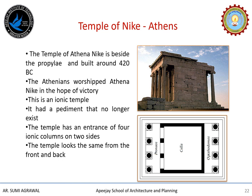The Temple of Nike is located just beside the Propylai. The Athenians worshipped Athena Nike in the hope of victory, and this temple is dedicated to Athena Nike. It is an Ionic temple which has four columns in the front as well as the back, so it looks the same from front and back. Having four columns, it is known as tetrastyle. The columns along the east and west fronts are monolithic. The ratio of height to diameter of the columns is 7 to 1, creating an elegance not encountered in the normal 9 to 1 or 10 to 1 of Ionic buildings. The temple is constructed from white marble.